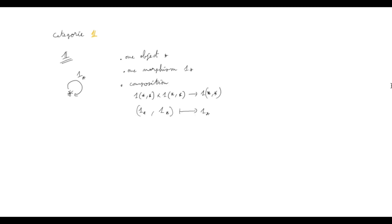We can define the composition if we want, but since there's only one morphism, it will have to map the only pair of morphisms to the only morphism. So that's category 1 — the simplest category, or almost the simplest, because a category with no objects would also exist.